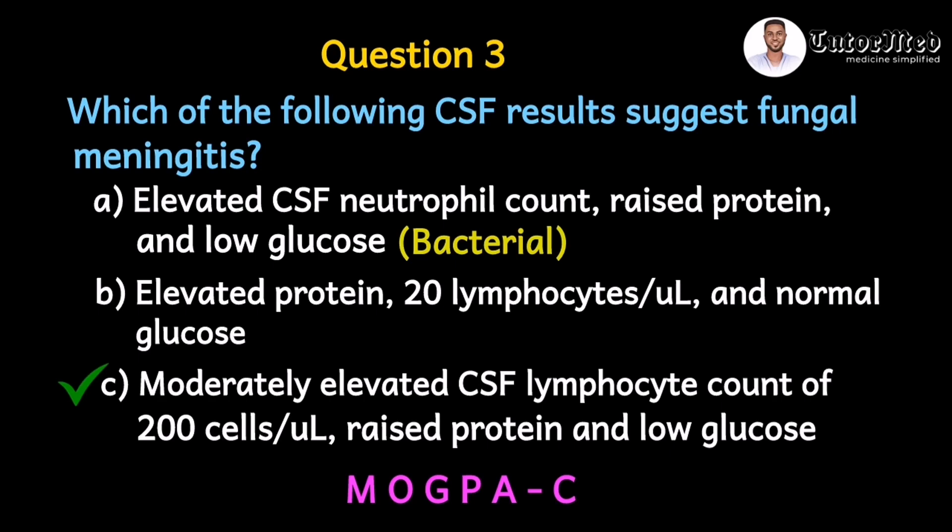Fungal meningitis would show elevated protein and elevated lymphocyte count, but the glucose would not be normal. In option B the glucose is normal, making it viral rather than fungal. Option C shows an elevated lymphocyte count of 200 cells per microliter, raised protein, and low glucose — the low glucose points to fungal or tuberculosis. Since the question asks about fungal meningitis, option C is the correct answer.